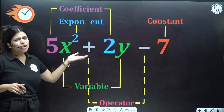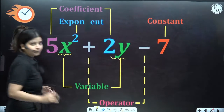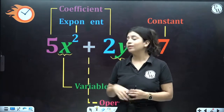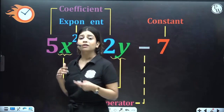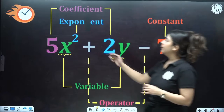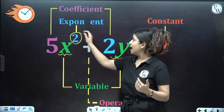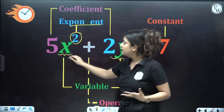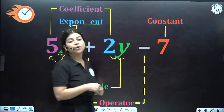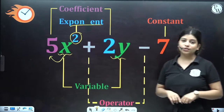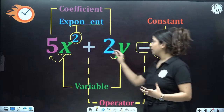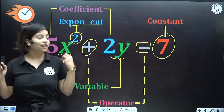If you see this expression, you can see certain variables — x and y. Variables are those whose values keep changing question by question. For example, the value of x in this expression might be 2, but for any other expression it can be 3, 4, or whatever the question demands. The variable is raised to a certain degree or power, known as the exponential power. The number attached to your variable is known as the coefficient — for example, the coefficient of x² is 5 and the coefficient of y is 2. The number without any variable is the constant term, and the positive and negative signs in between are the operators.